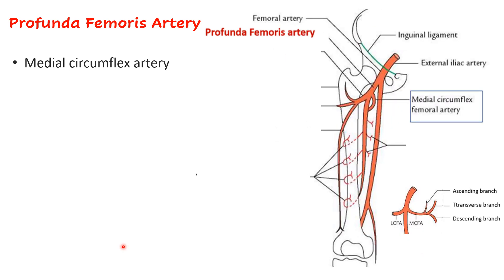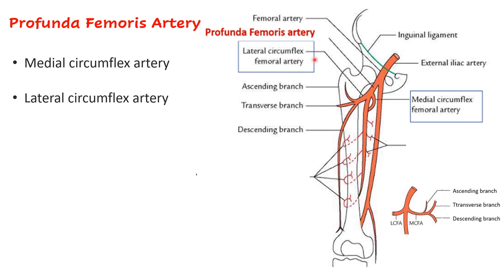The second branch of the profunda femoris artery is the lateral circumflex femoral artery, which runs laterally on the anterior aspect. It also gives three branches — ascending, transverse, and a descending branch. All three branches participate in anastomoses: the ascending and transverse branches in the upper part of the back of the thigh.